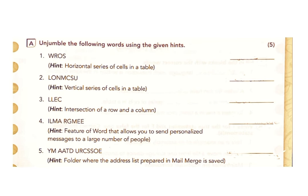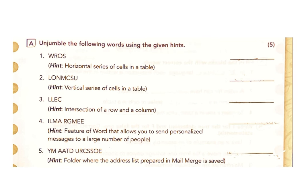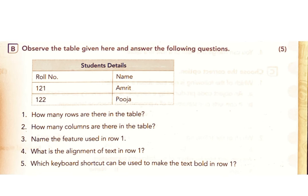4) ILMARGMEH — Hint: Feature of Word that allows you to send personalized messages to a large number of people. Answer: Mail Merge. 5) MAATDURCSSO E — Hint: Folder where the address list prepared in mail merge is saved. Answer: My Data Sources.